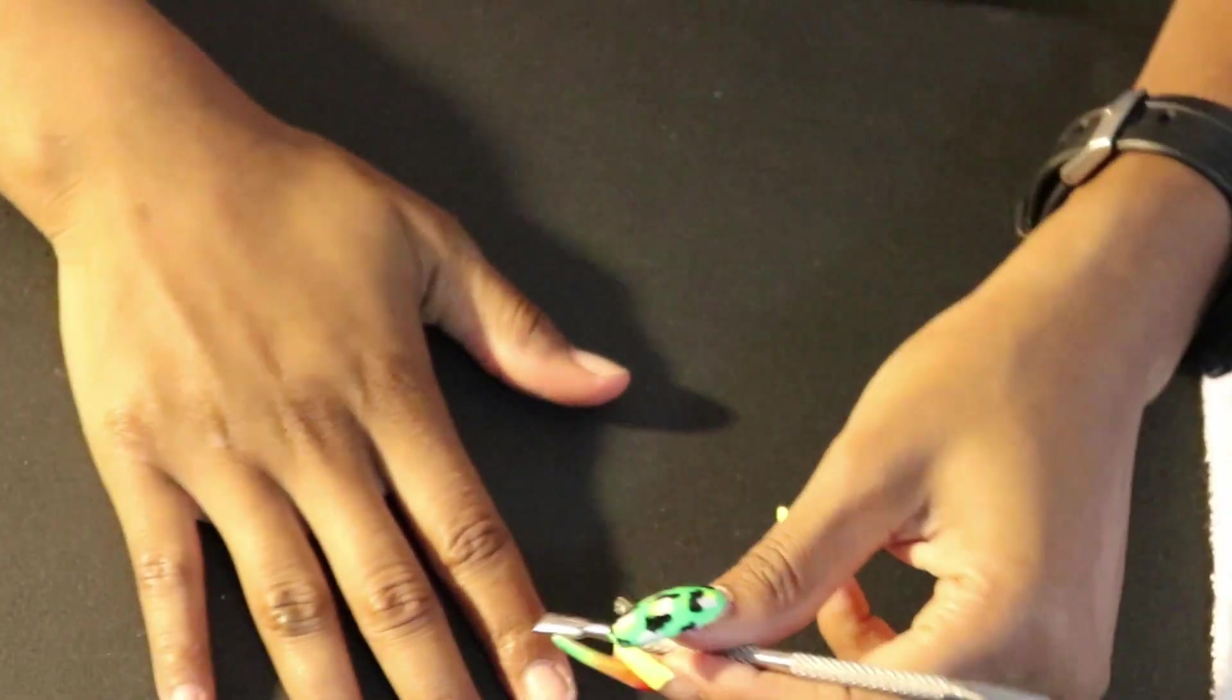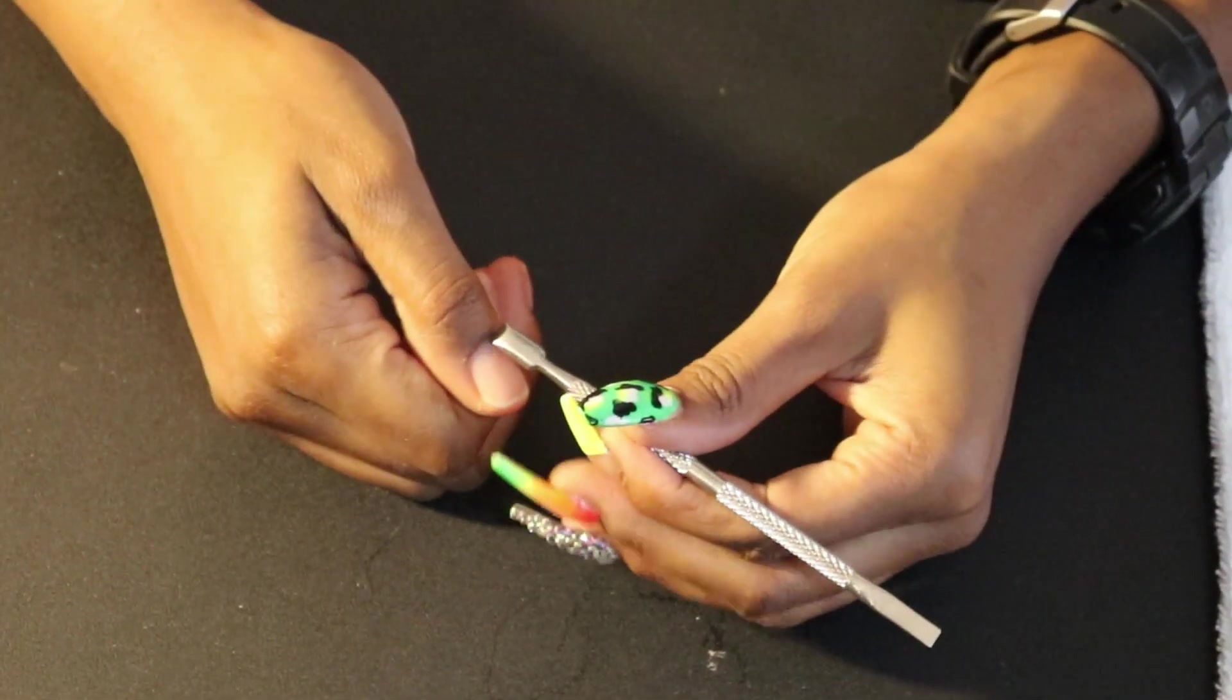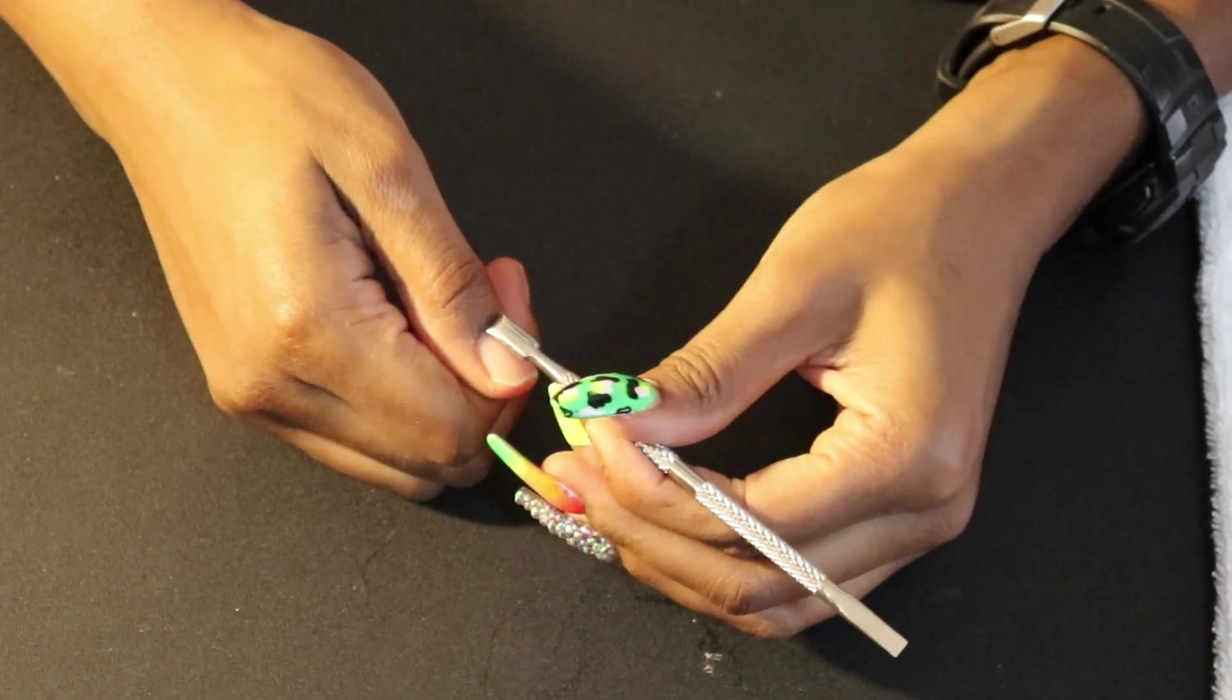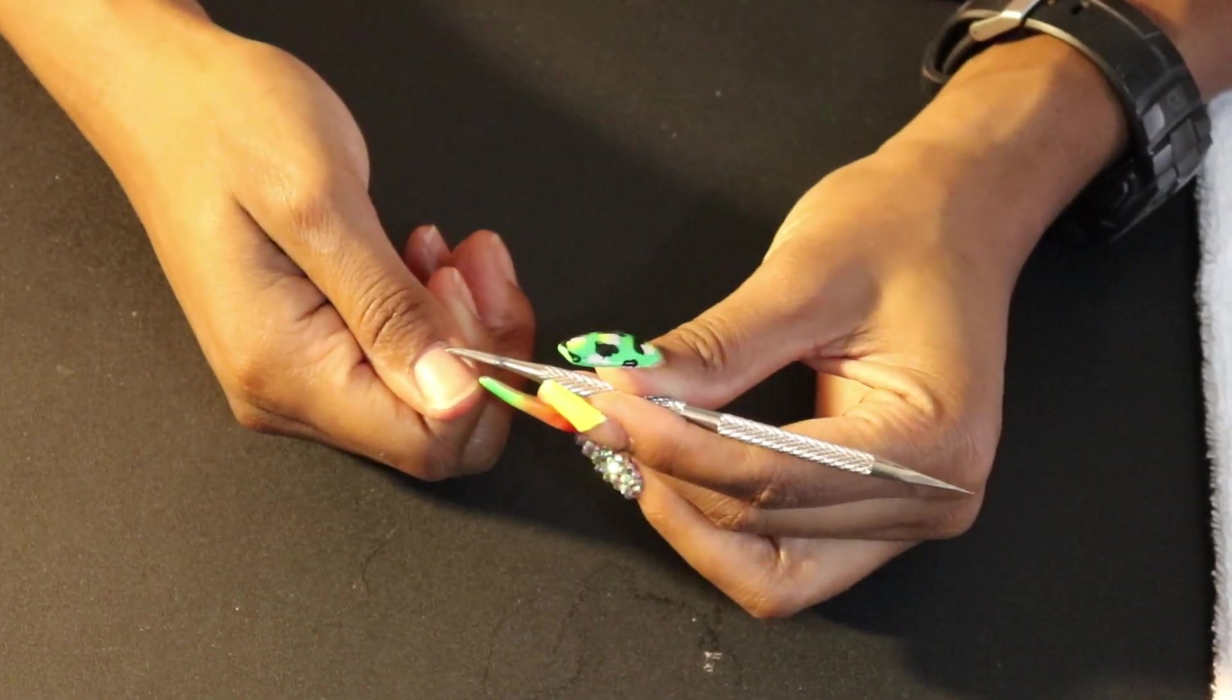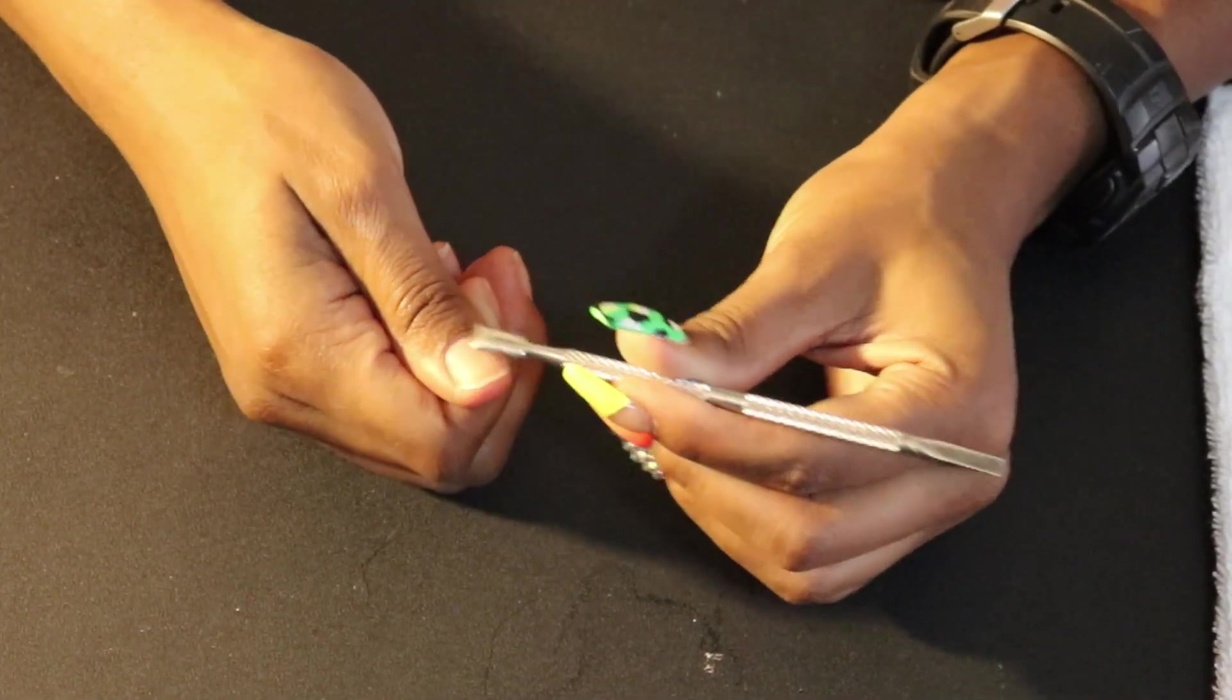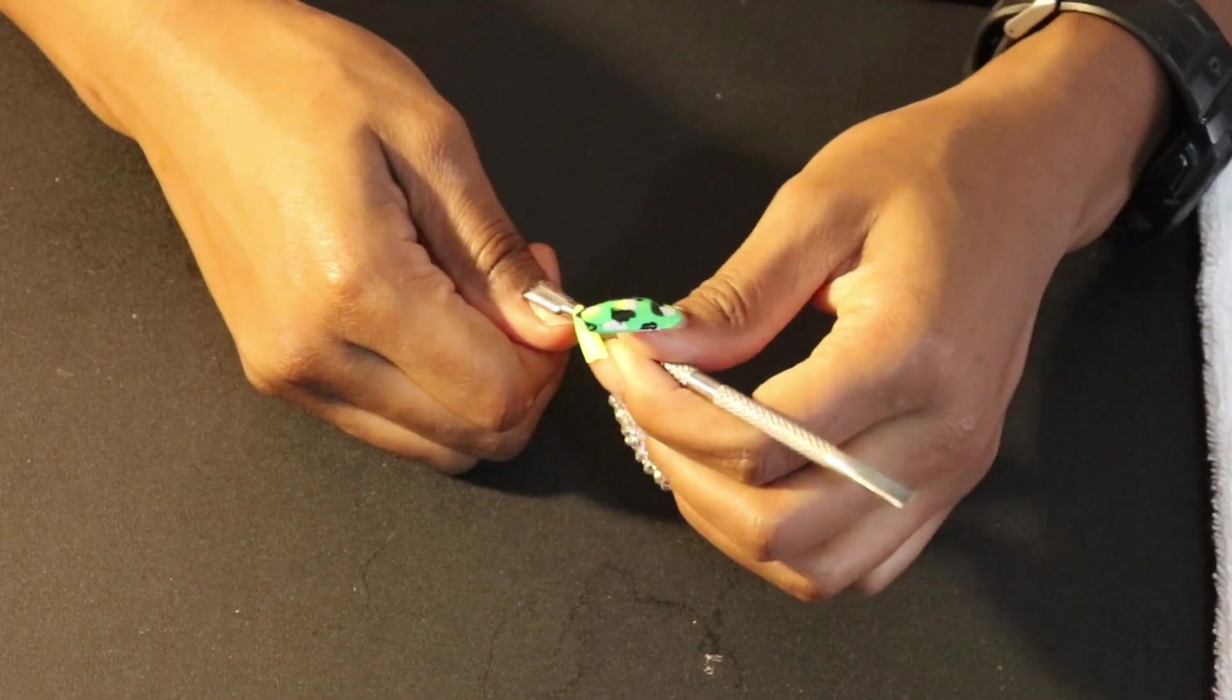Next, I'm going to push back my cuticles. I tend to have a lot of dead skin around my cuticle area that grows really fast, so this is something I have to do weekly. I prefer to use a metal cuticle pusher, but you don't necessarily have to.